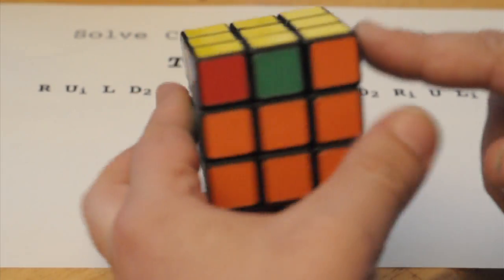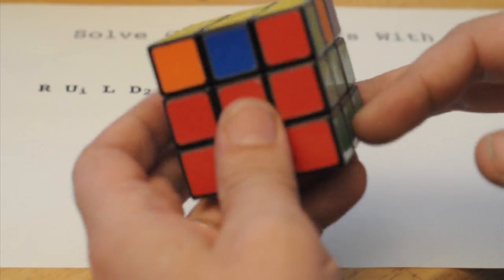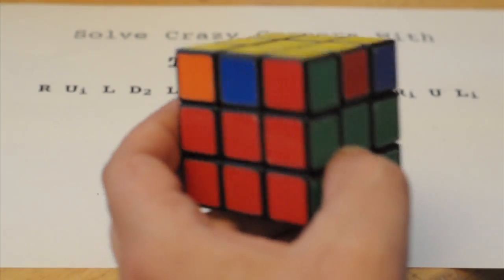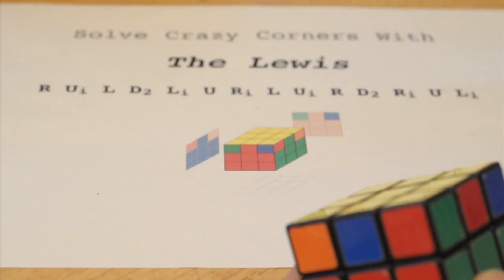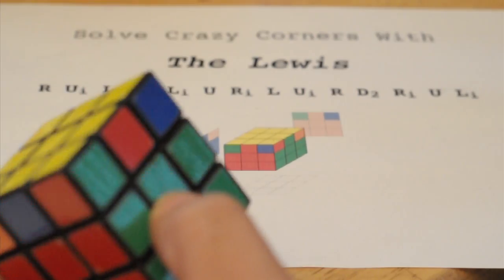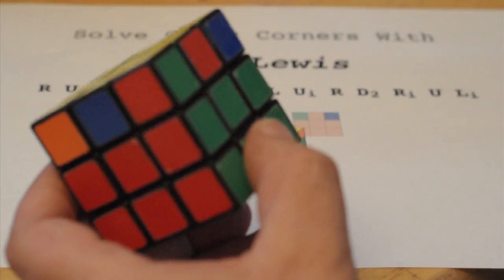This solves all the crazy corners. And if you follow my positioning guide, it either solves the cube outright or it usually gives you one Allen or reverse Allen away from solving the cube.